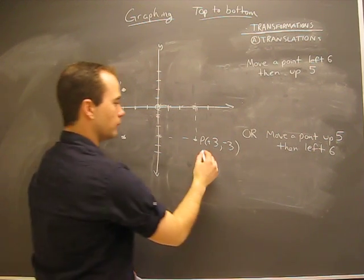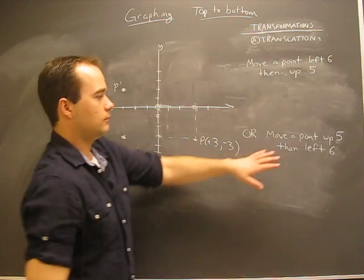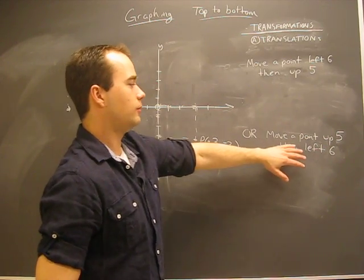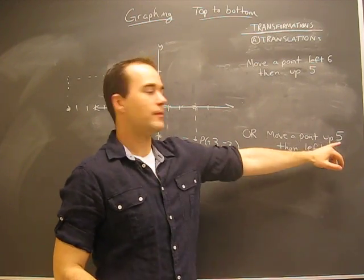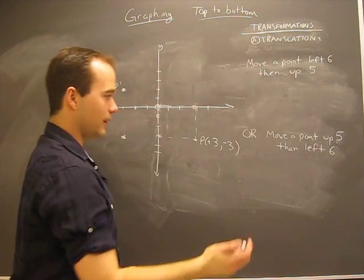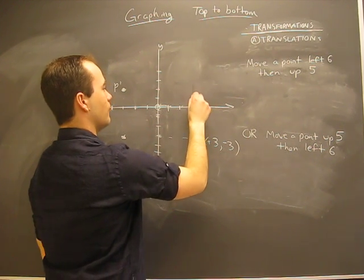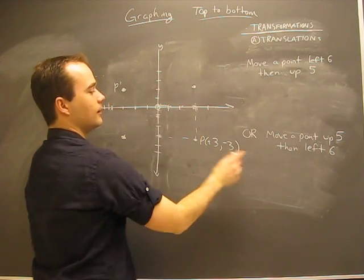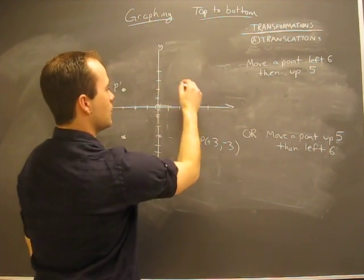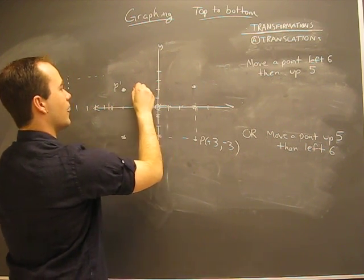That's fine. What about if we change the order and say what if we took the initial point and move it up 5 and then left 6? What happens? Well let's check it out. If we move this up 5: 1, 2, 3, 4, 5, we end up there. And now we have to move it left 6: 1, 2, 3, 4, 5, 6.